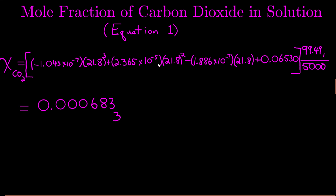This is where we calculate the mole fraction of carbon dioxide in the solution. Remember, mole fraction is moles of carbon dioxide divided by the total moles. This is equation one in your lab. This equation is an empirical equation that I got by fitting a cubic equation to some data. The temperature in the equation — here, here, and here — is the temperature of your solution, same as the temperature of your carbon dioxide. For me it was 21.8, but yours is probably going to be different, so use your number. This is the vapor pressure of carbon dioxide above the solution in kilopascals. We treat the 5,000 as exact. And this is the mole fraction of carbon dioxide in the solution.